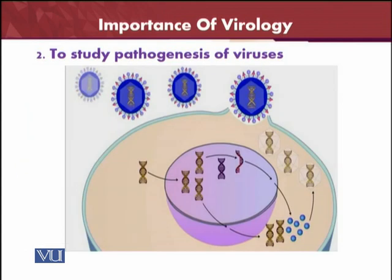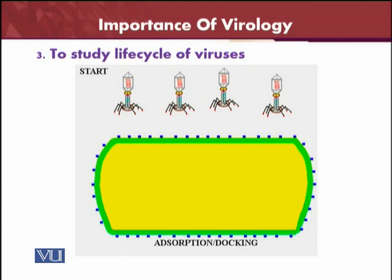The study of pathogenesis of viruses — how much viruses cause disease and what effect they have — is important. The life cycle of viruses is also very important: from where the virus originated, how it causes disease, and what different aspects and steps are involved in causing disease.